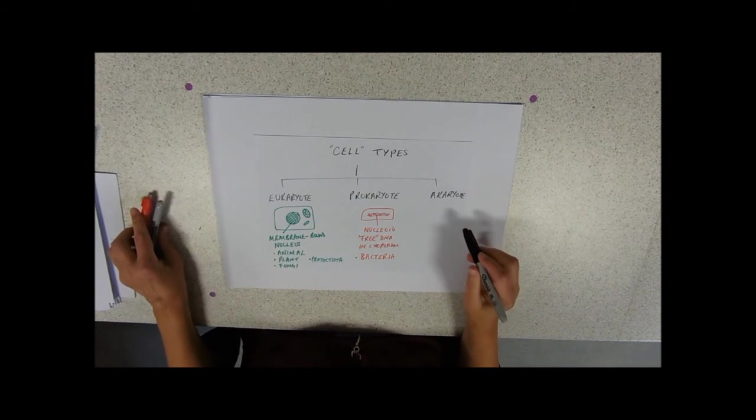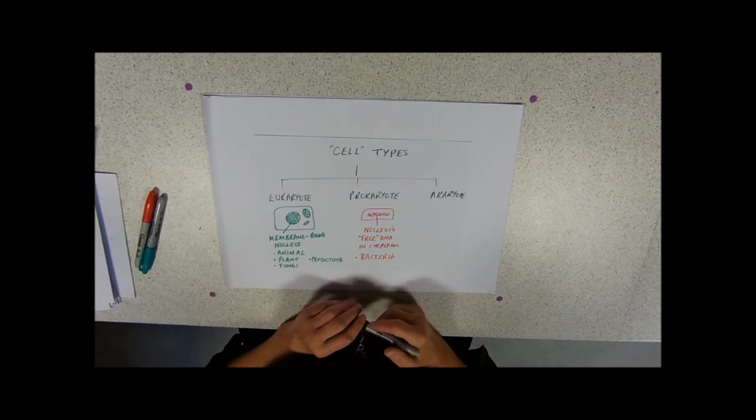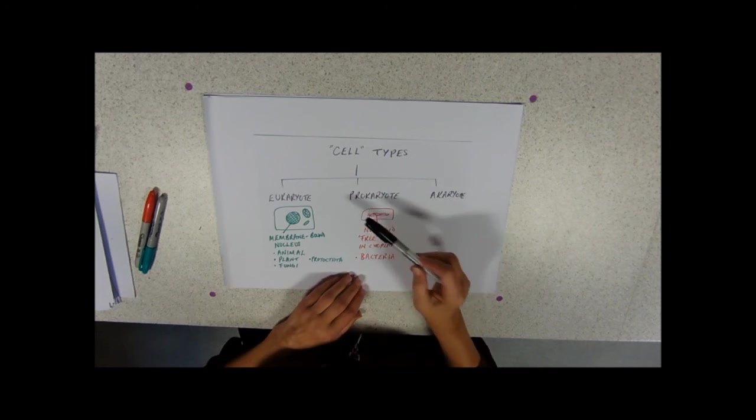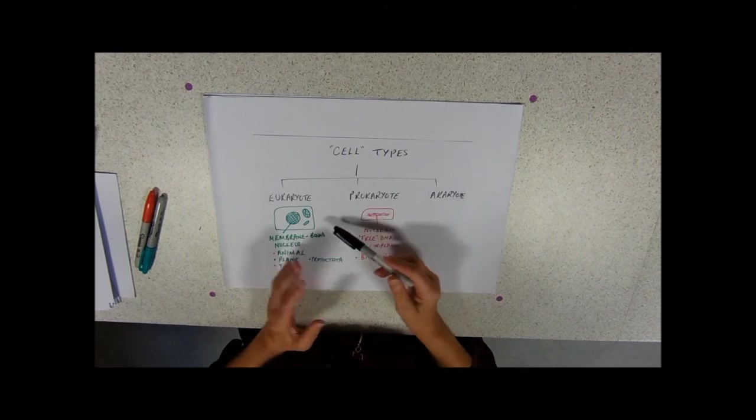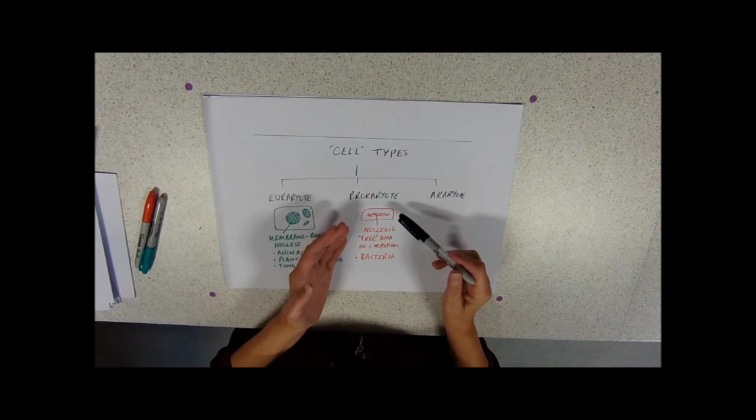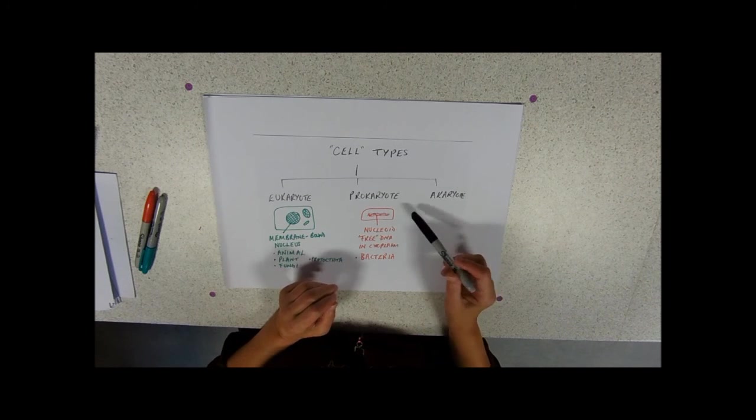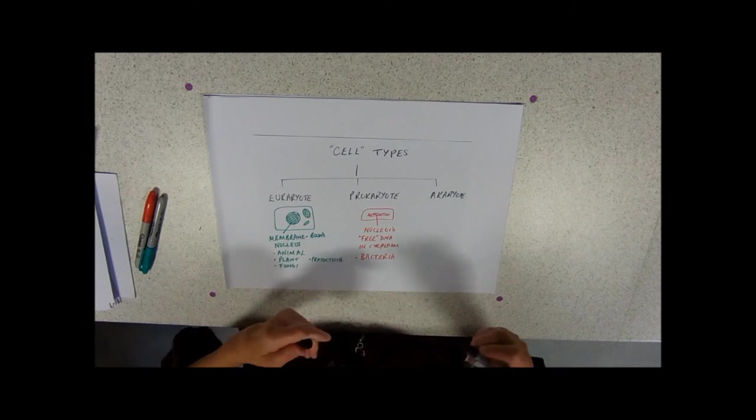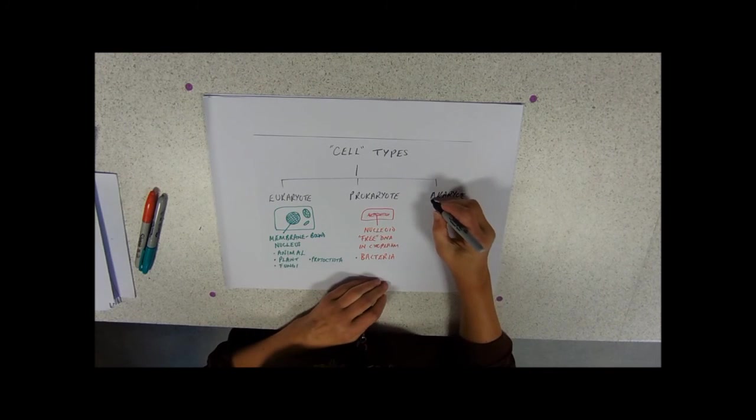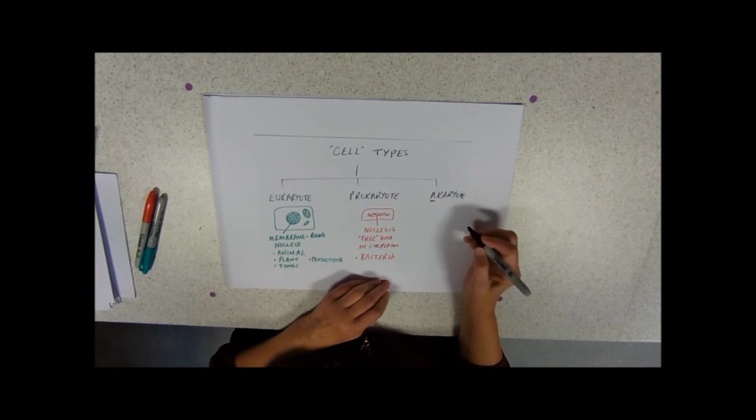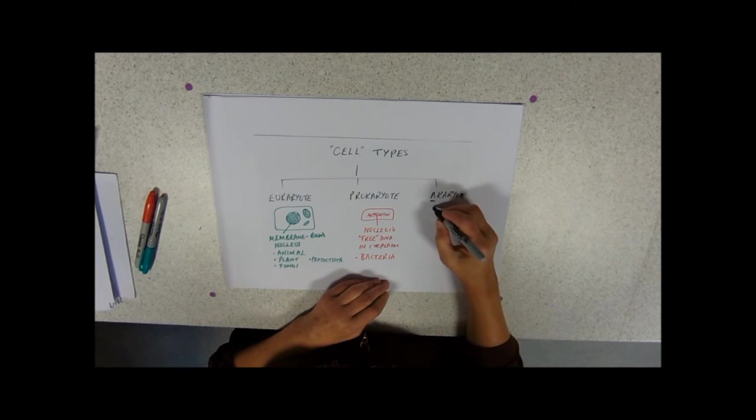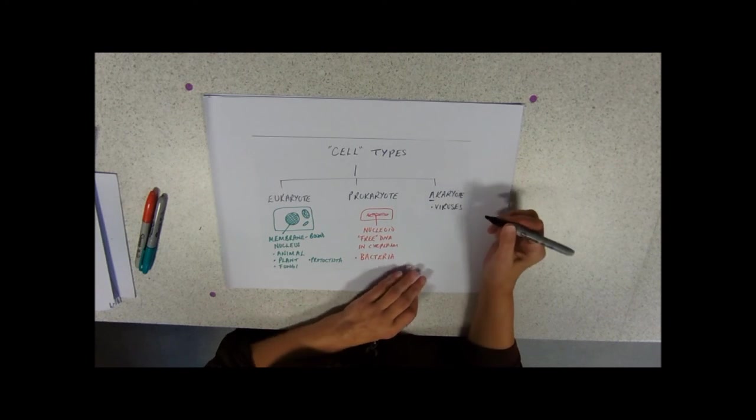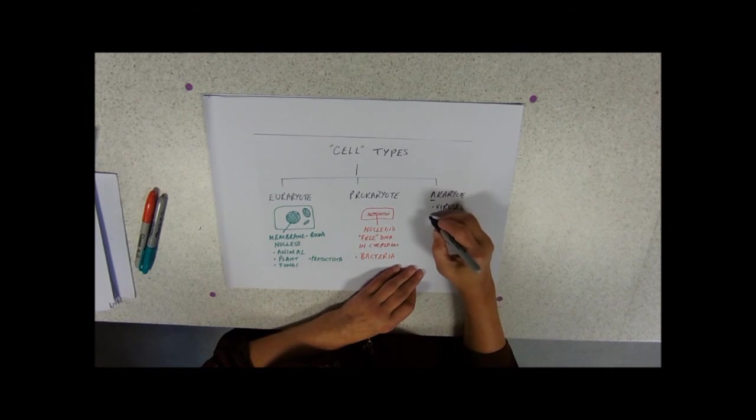And then we've got the acaryote. Now a is a prefix, it's a pro-mean sort of before, if you like. So the sort of original idea was, the DNA was just sort of floating free in the cytoplasm. So this is kind of pre-nucleus. A as a prefix means no. So these are not cellular things. These have no nucleus at all. And we're really only talking about viruses, which are pretty much on the edge of life and non-life. And these are not cellular.